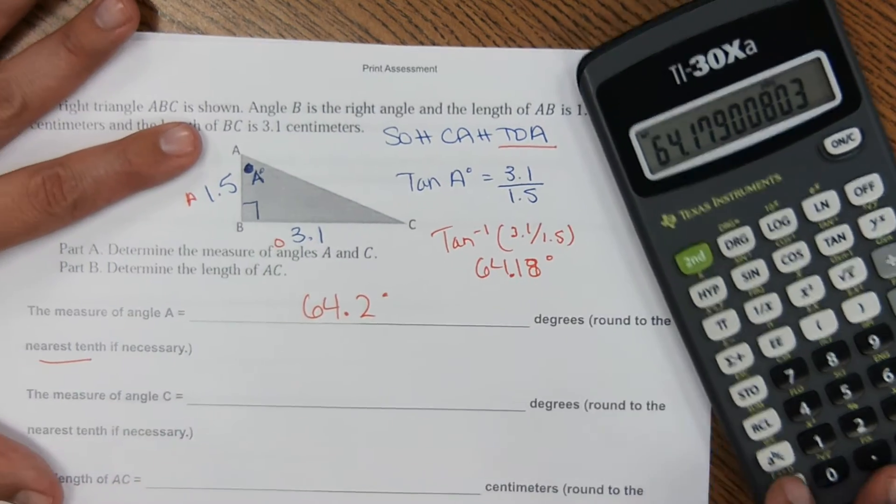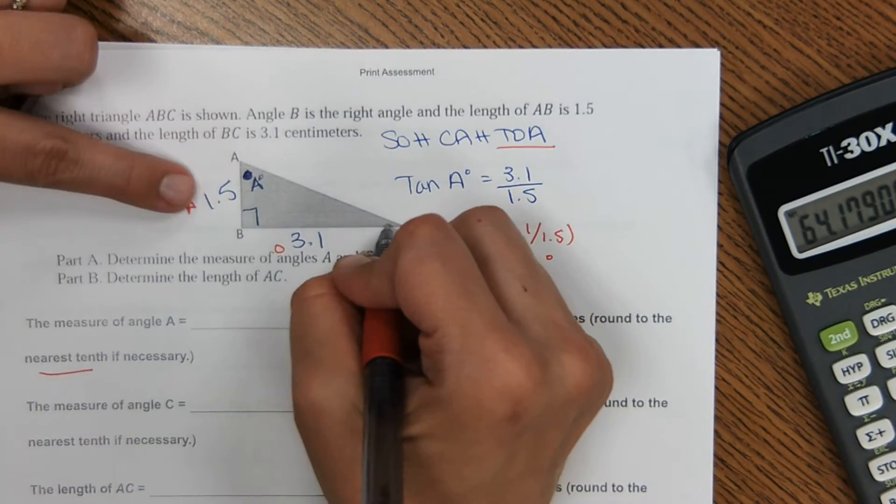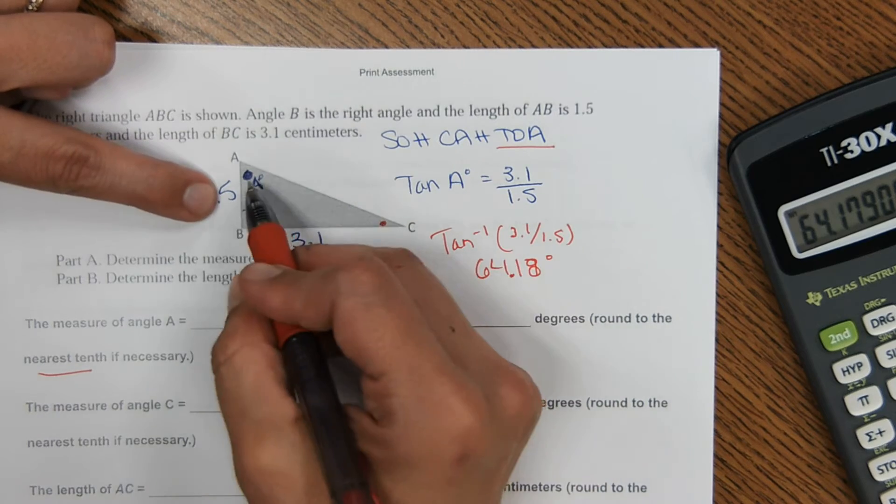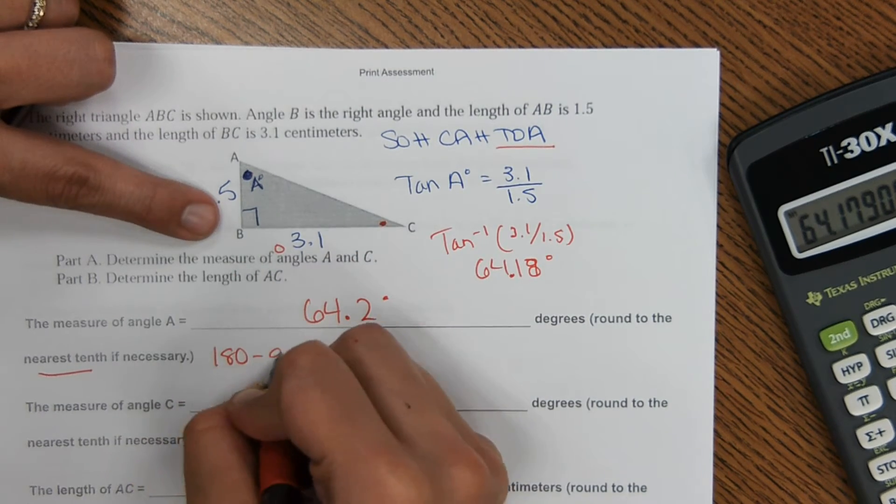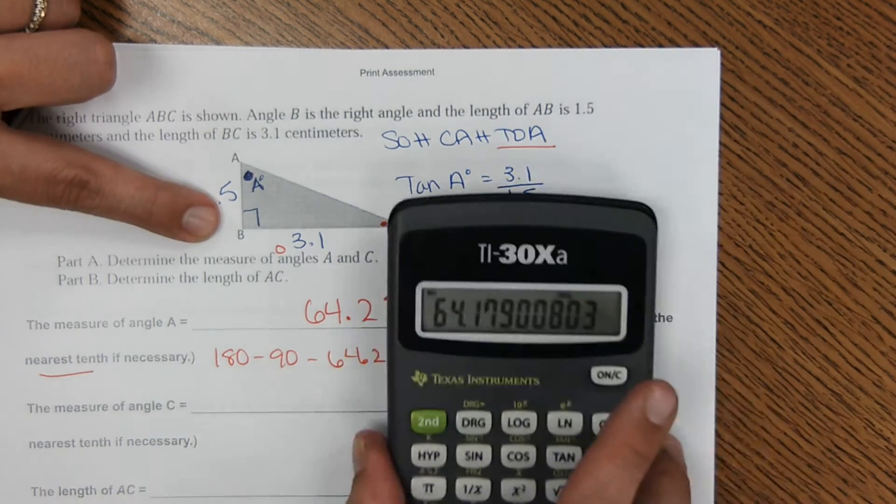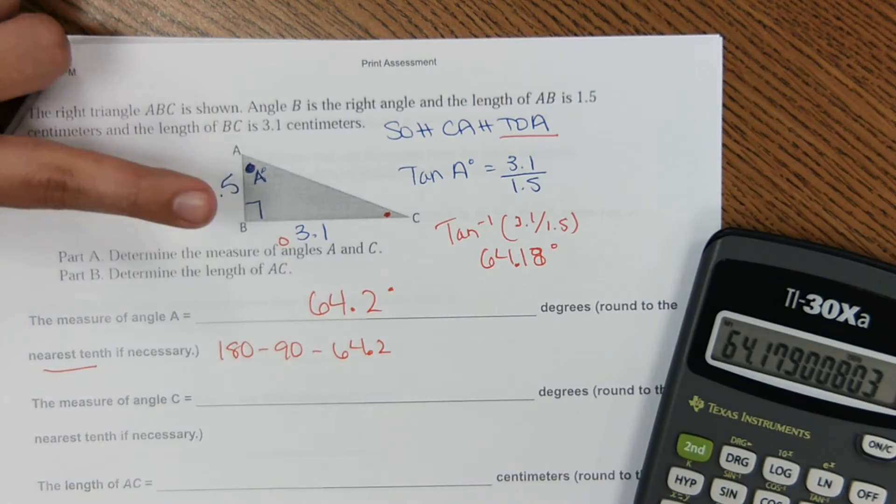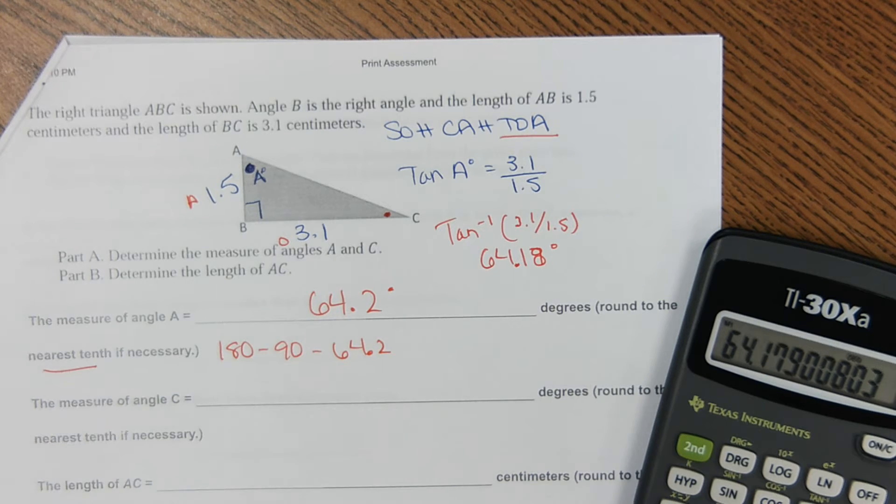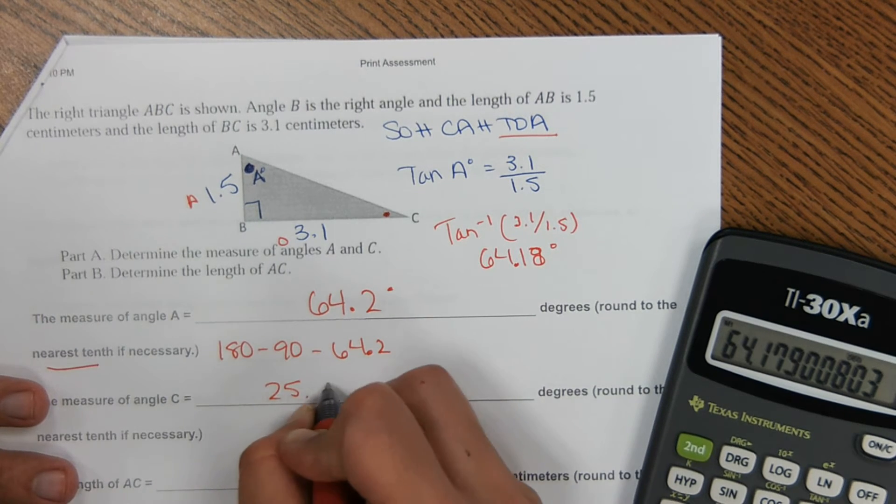And then it asks for the measure of angle C right here. Well, the three angles of a triangle have to add up to 180. So I can do 180 minus 90 minus 64.2 to find angle C. And that comes out to 25.8 degrees.